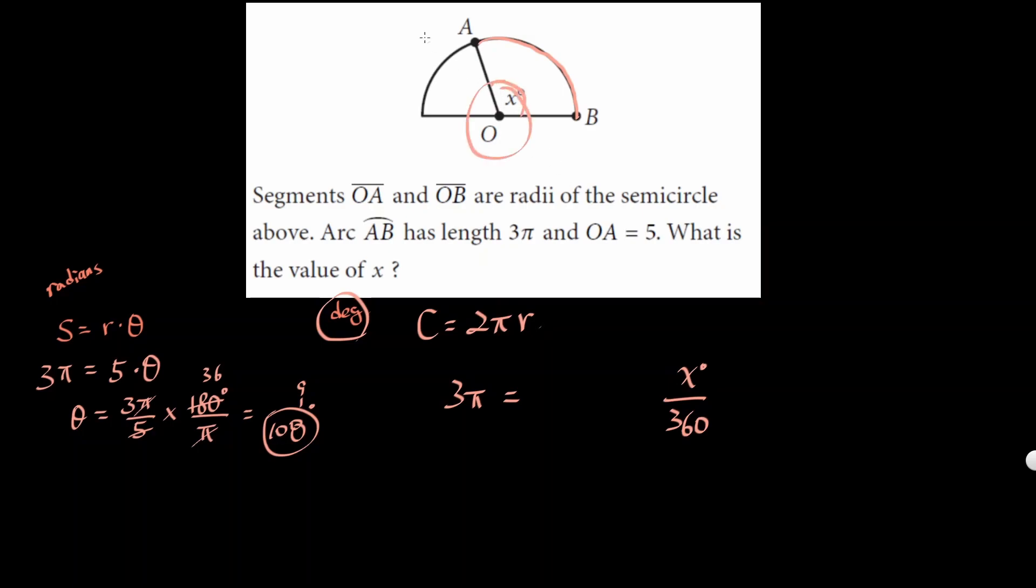Because x is a part here out of the whole 360 degrees. So 2πr is what the whole circumference of the circle would be, but we don't want the whole thing. We want x part over 360 whole part. Set that equal to 3π because this is 3π.